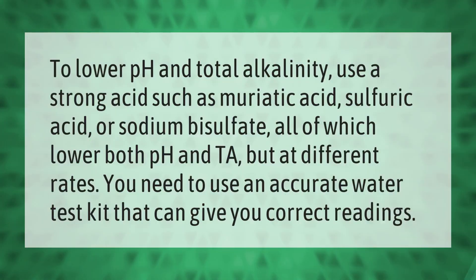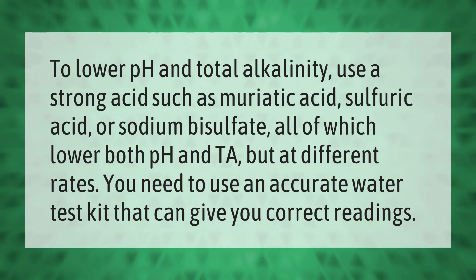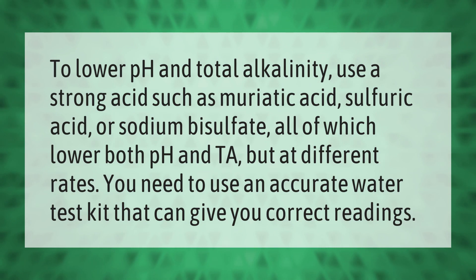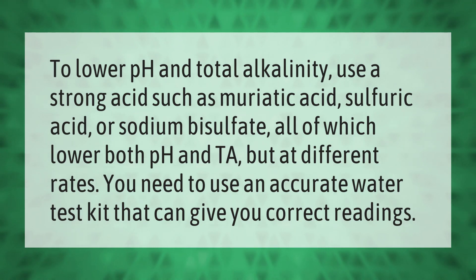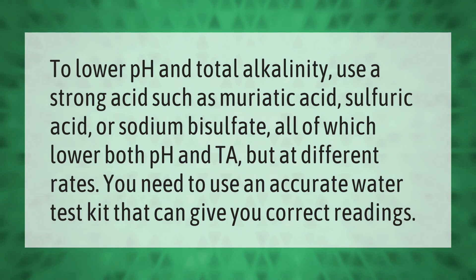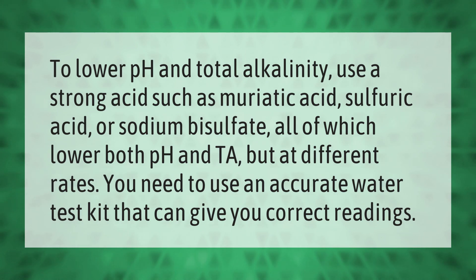To lower pH and total alkalinity, use a strong acid such as muriatic acid, sulfuric acid, or sodium bisulfate — all of which lower both pH and total alkalinity, but at different rates. You need to use an accurate water test kit that can give you correct readings.